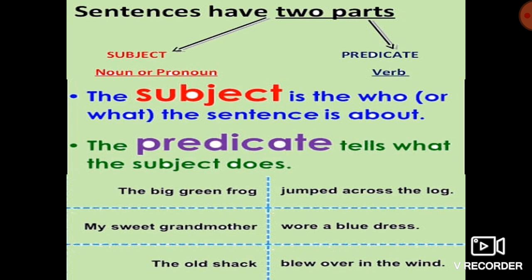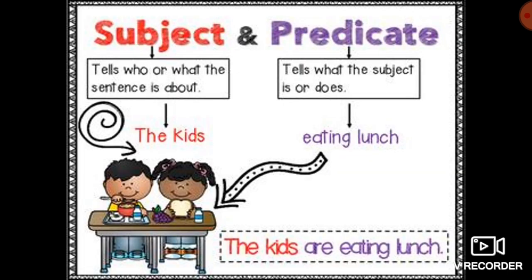So, the subject is the who or what the sentence is about, and the predicate tells what the subject does. Now let's move to another example. Here you can see two kids who are eating something. 'The kids' tells about the persons, and 'eating lunch' tells about what they are doing. So, the sentence is: 'The kids are eating lunch.' In this sentence, 'the kids' is the subject and 'are eating lunch' is the predicate.